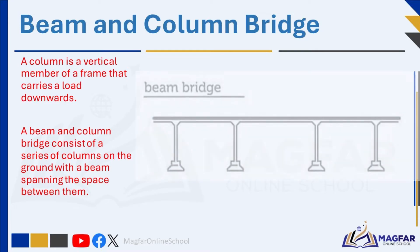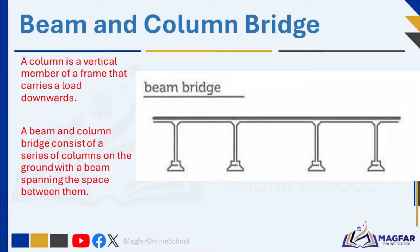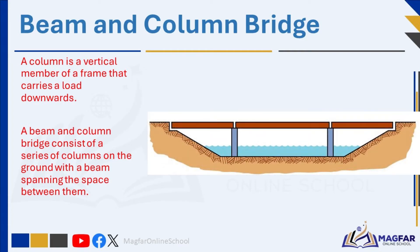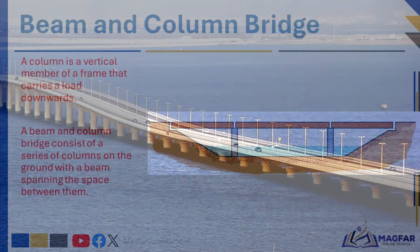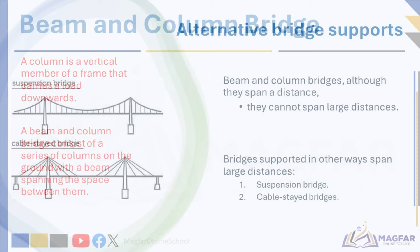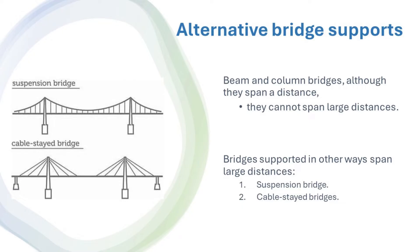A column is a vertical member of a frame that carries a load downwards. A beam and column bridge consists of a series of columns on the ground with a beam spanning the space between them. This is a simple bridge design where vertical columns support horizontal beams. The beams carry the weight of the bridge and traffic across the gap. The beam and column bridge is common in various bridge designs over roads and rivers, providing stability and load-bearing capacity. However, although they span a distance, they cannot span a distance over deep water, a deep valley, or when the distance is too large.